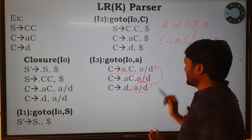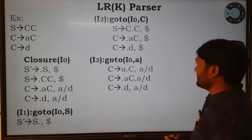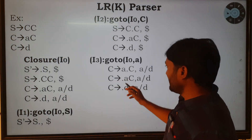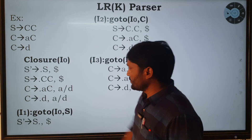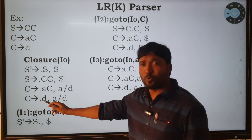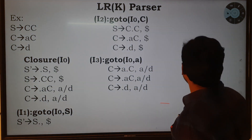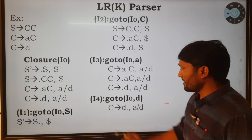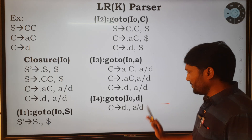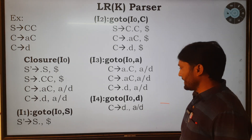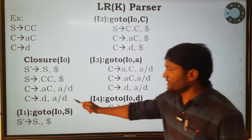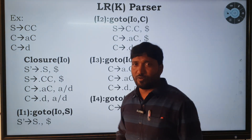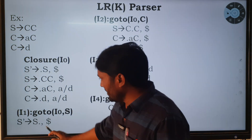So C → •aC gets lookahead a or d, and C → •d gets lookahead a or d. Now apply goto(i0, d): shift the dot one position to the right, giving C → d• with input string a or d. That completes i0.